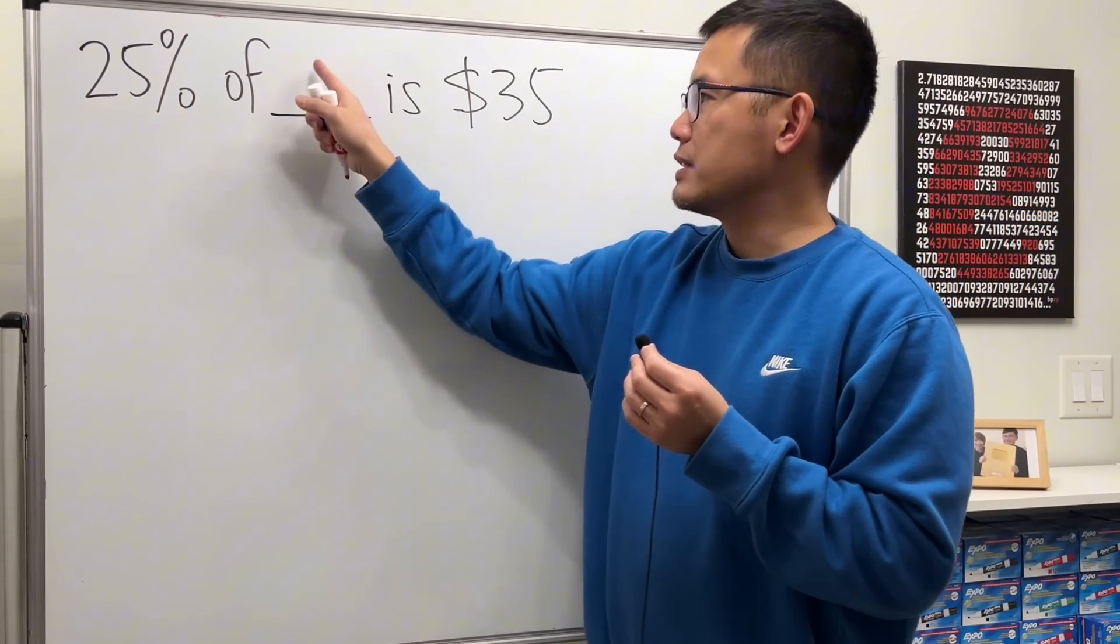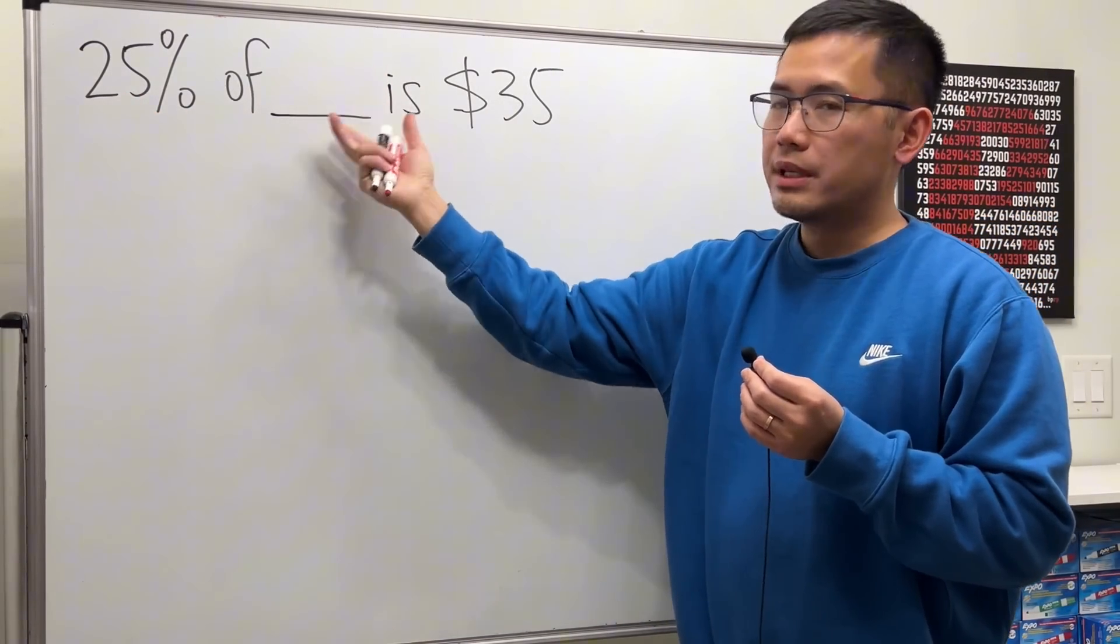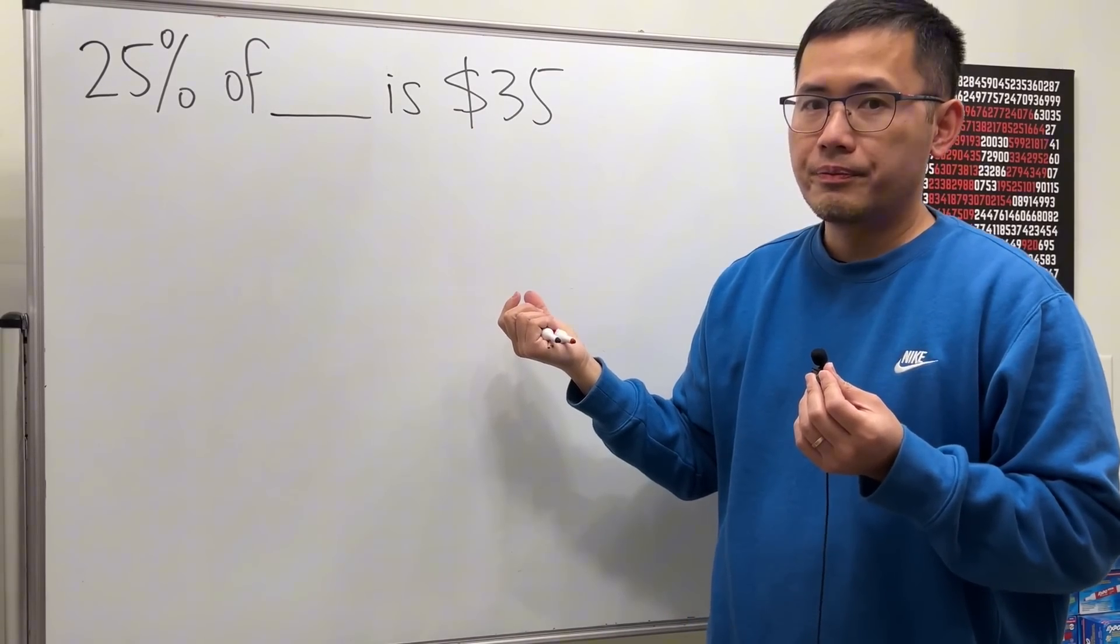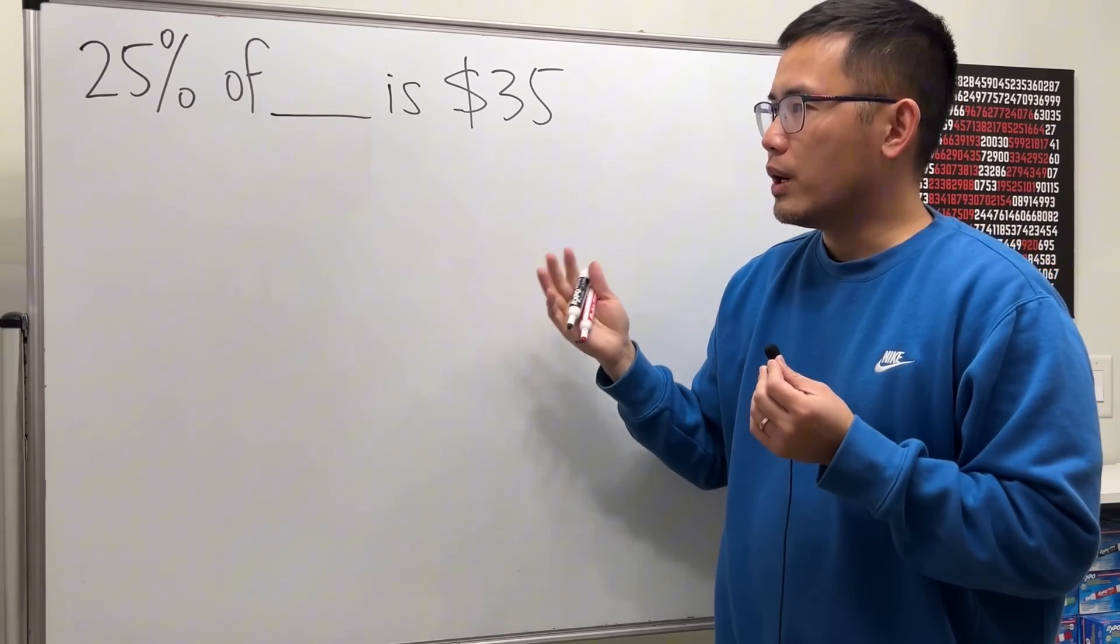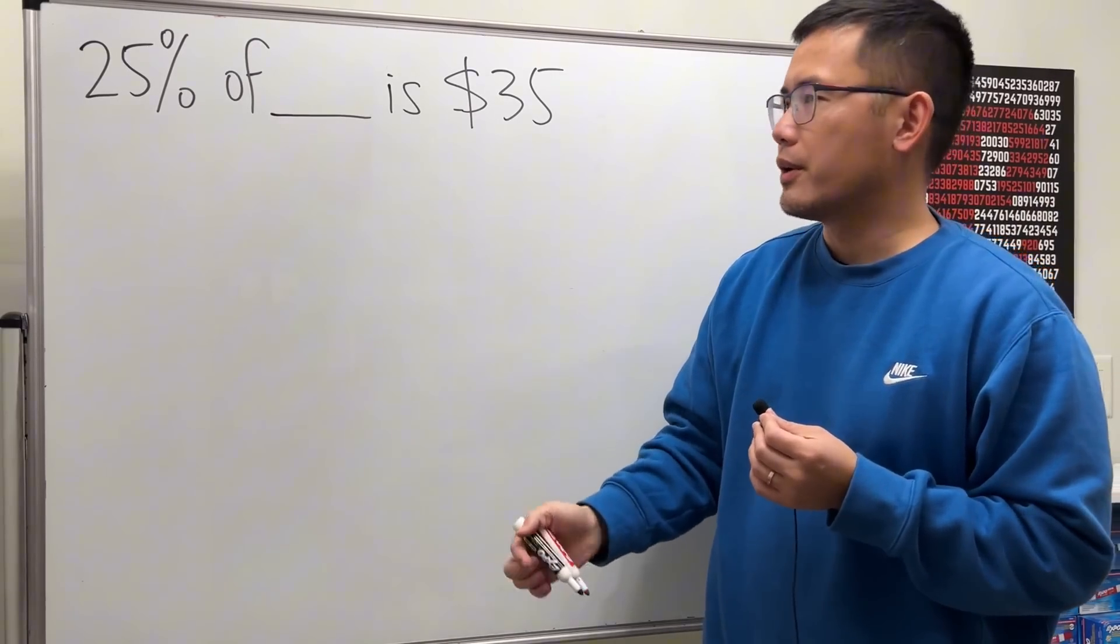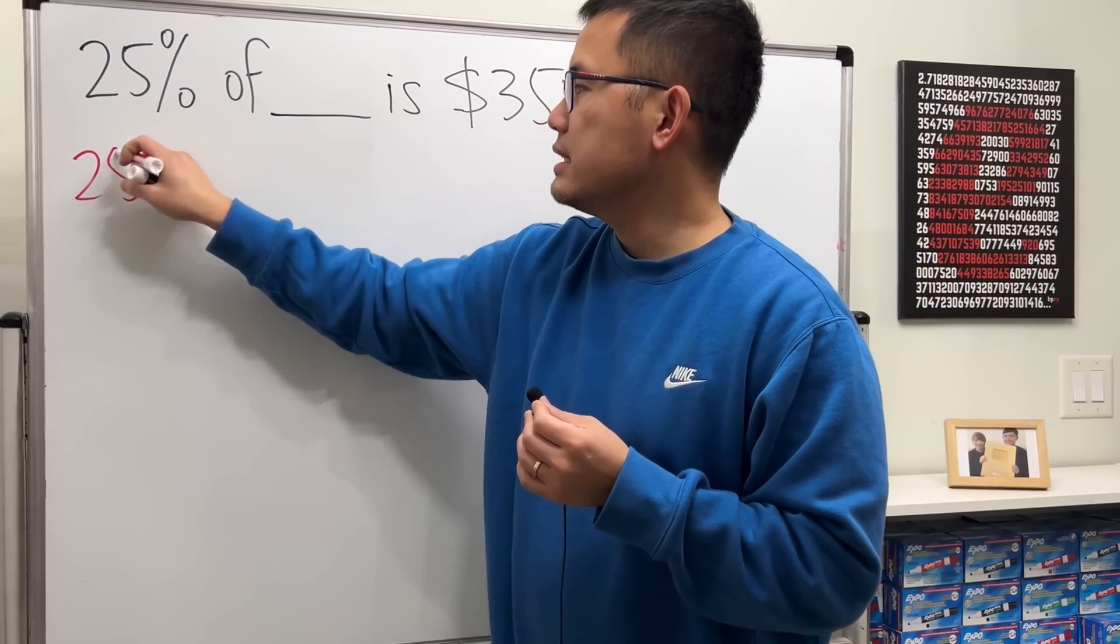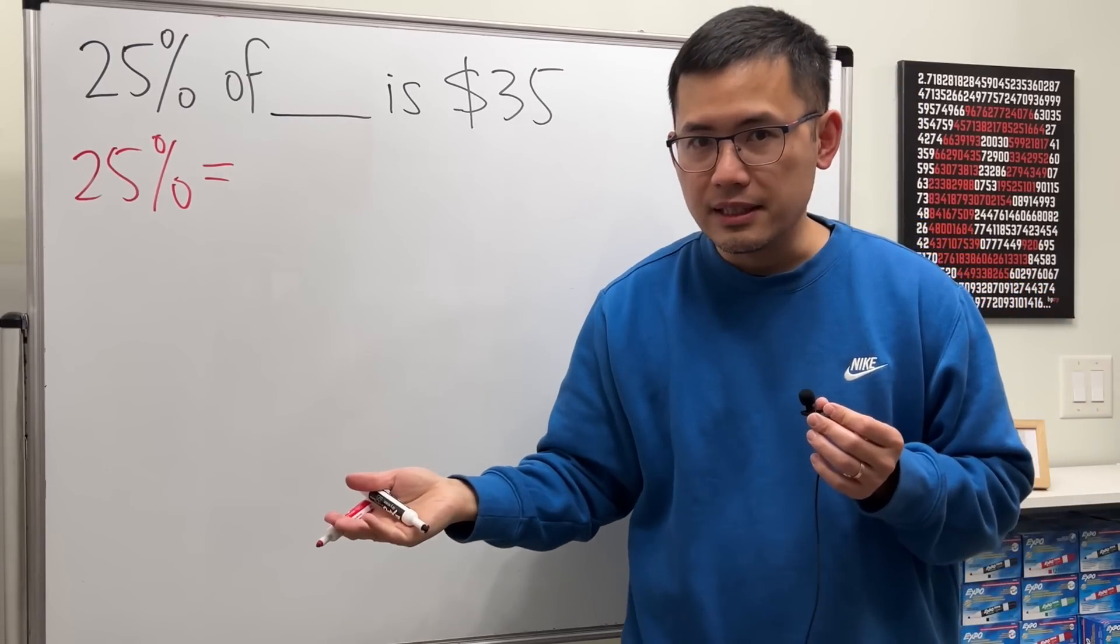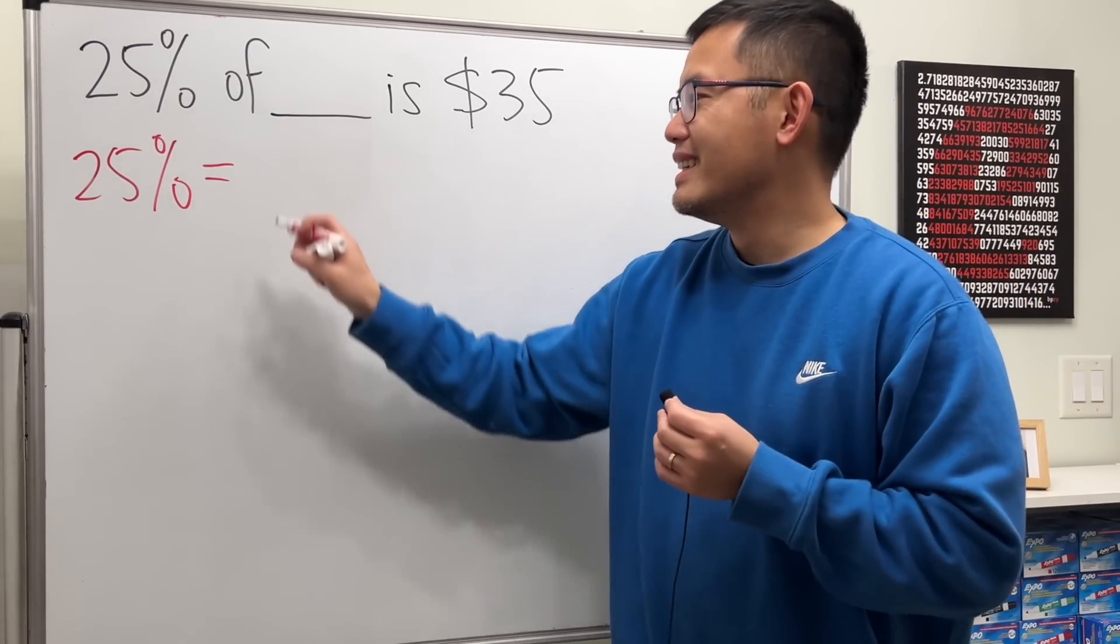We would like to know 25% of some blank—this is the number we don't know—and we know the result is $35. Let me show you a way to understand this before we do the algebra. Notice the 25% is actually a very nice percentage because that's the same as a quarter, or one over four.